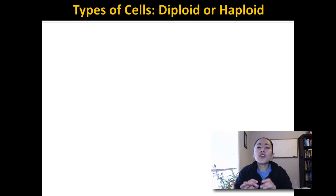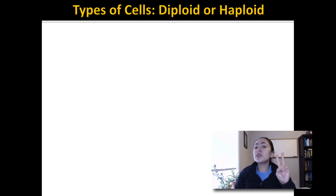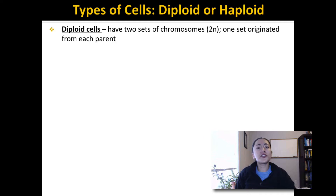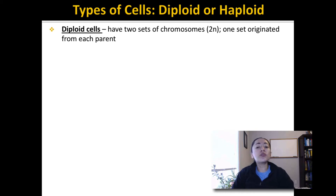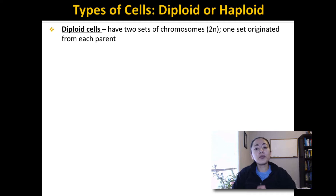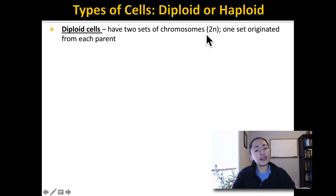Before we start talking about mitosis and meiosis, you need to be familiar with two different types of cells found in your body. Most of the cells in your body are what we call diploid cells. A diploid cell is a cell that has two sets of chromosomes — chromosomes are strands of DNA. Since diploid cells have two sets of chromosomes, you sometimes see diploid cells labeled as 2n, which means two sets.